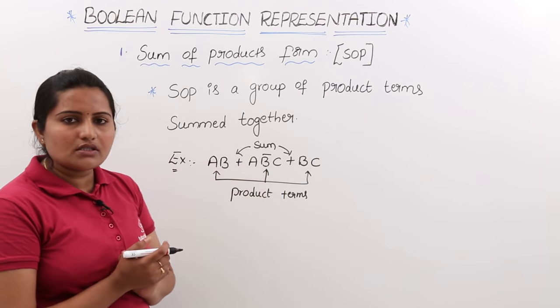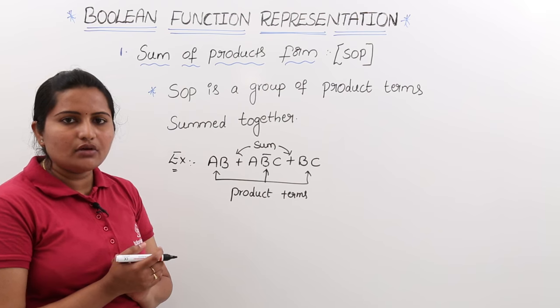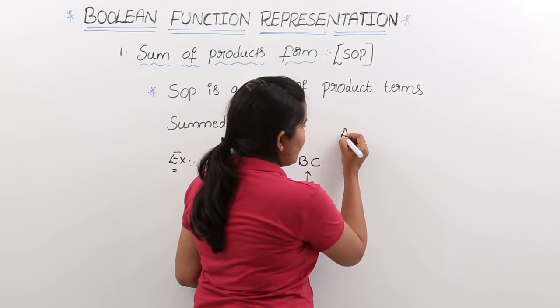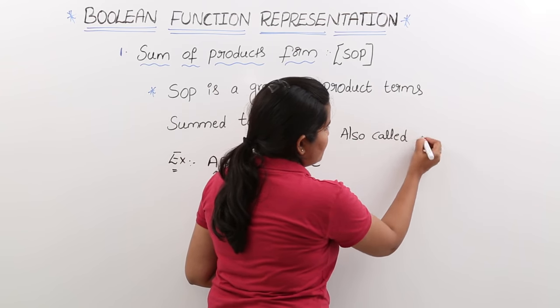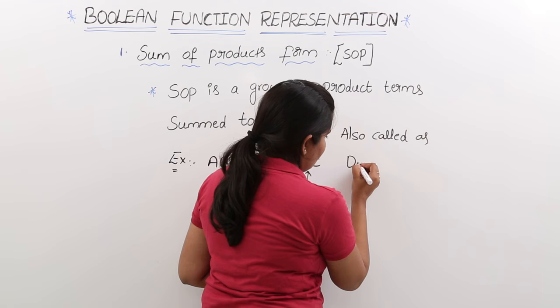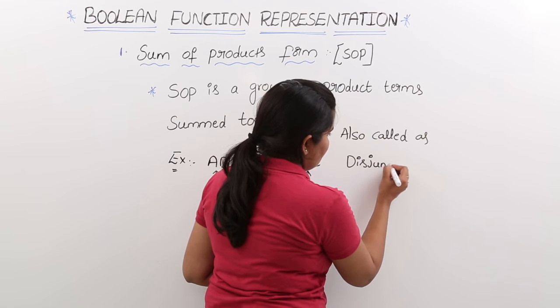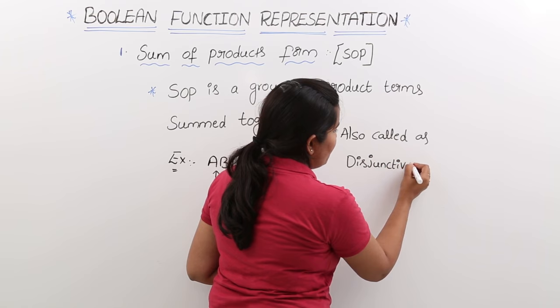And this is also called disjunctive normal form.